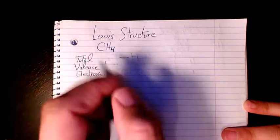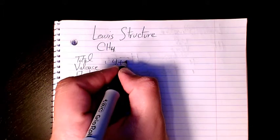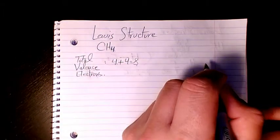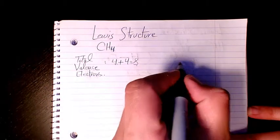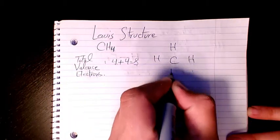So carbon, the total valence electron is four. Hydrogen is one, so we have four of them, so it's going to be four plus four, which is eight. Then we have C in the center and four hydrogen here.